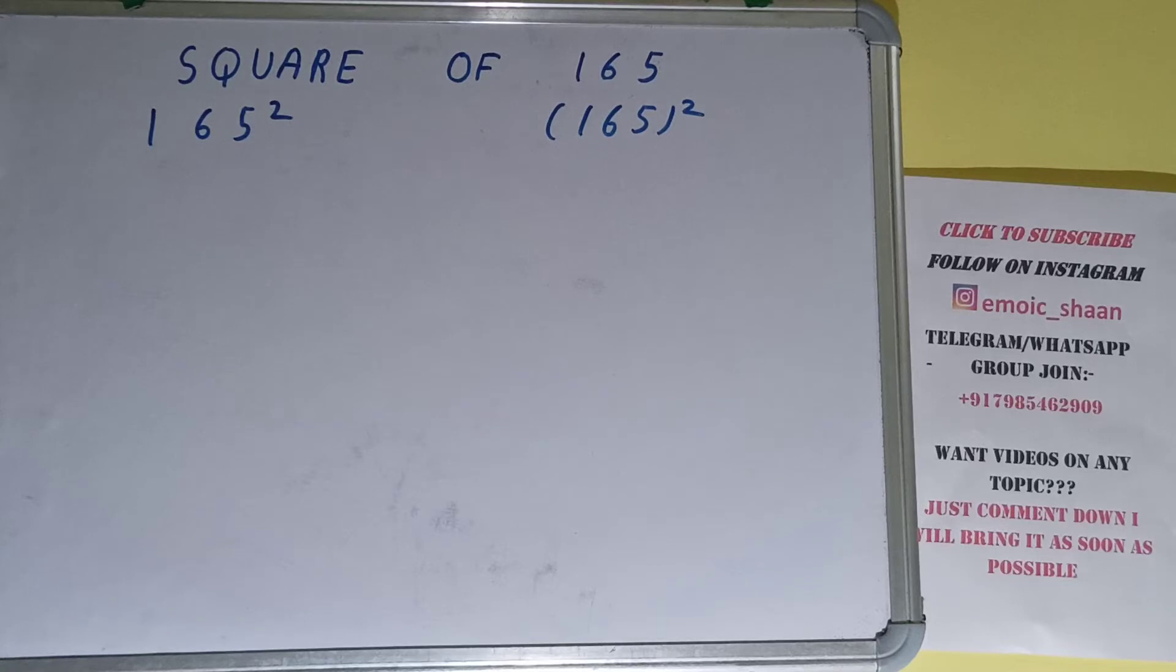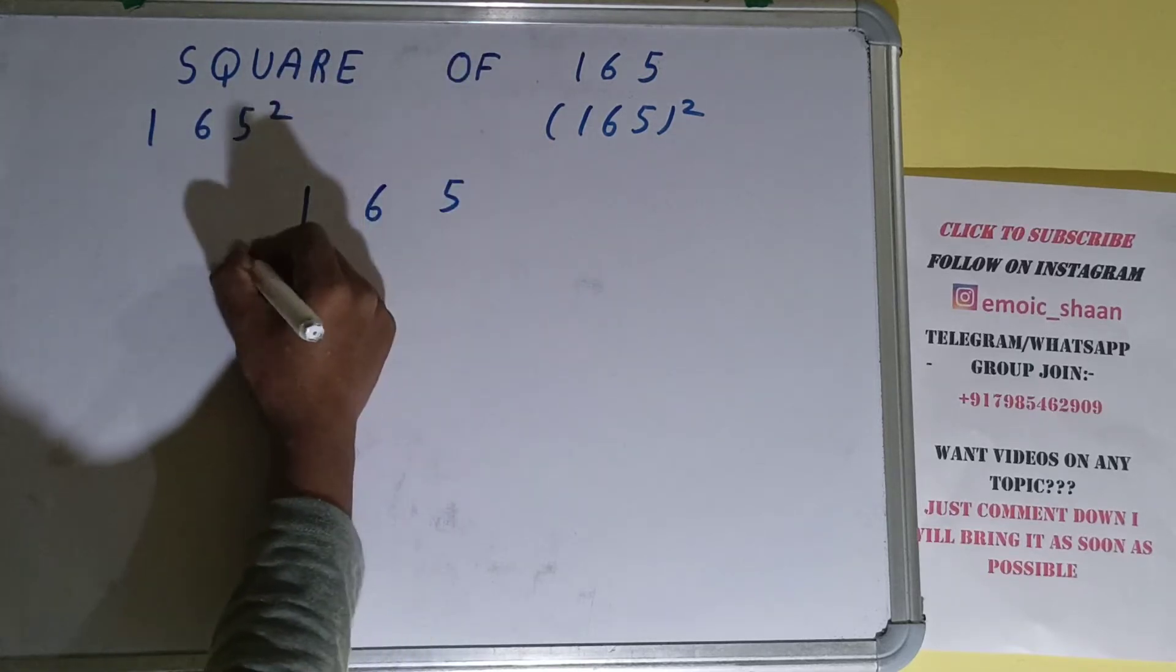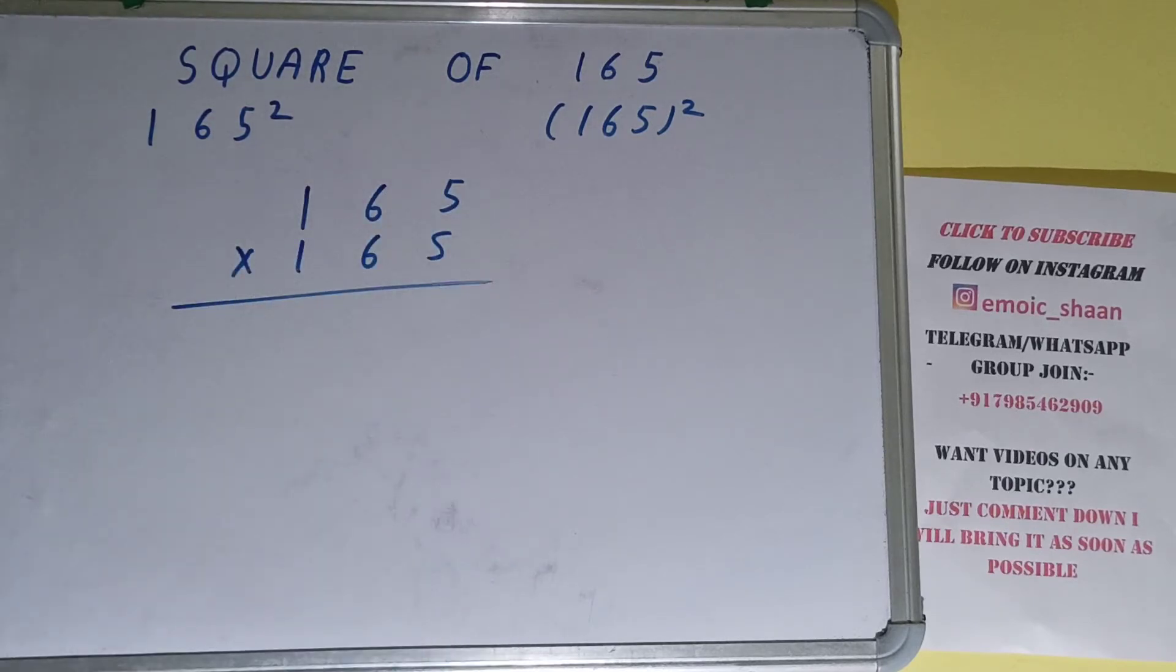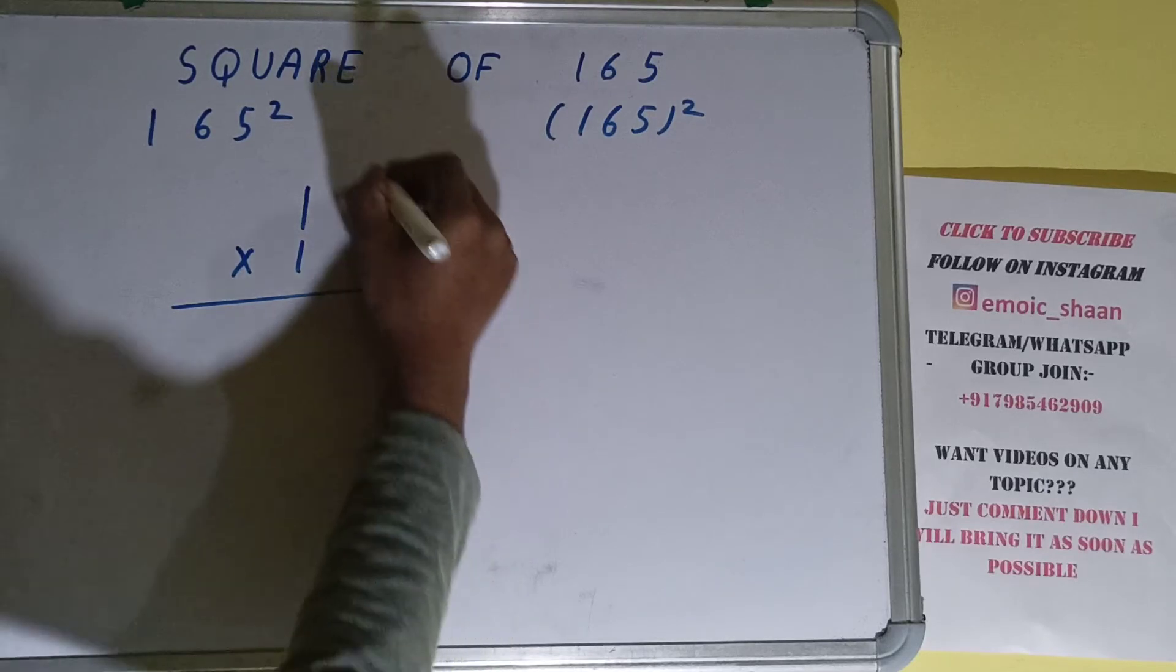We need to find out the square of 165. Now moving on to the solution, square basically means multiplying the number by itself. The number over here is 165, so to find the square of it we need to multiply it by itself, that is 165, and do the normal multiplication. So let's begin with this: 5 times 5 is 25, 5 down, 2 carry.